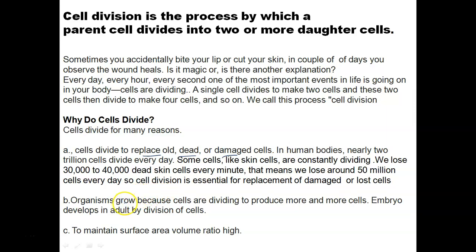Cell division occurs at the time of growth. When the zygote is formed, a complete individual develops from that single cell just by division. The zygote divides, then the infant grows to adolescence. We attain full growth from a single cell by division only.